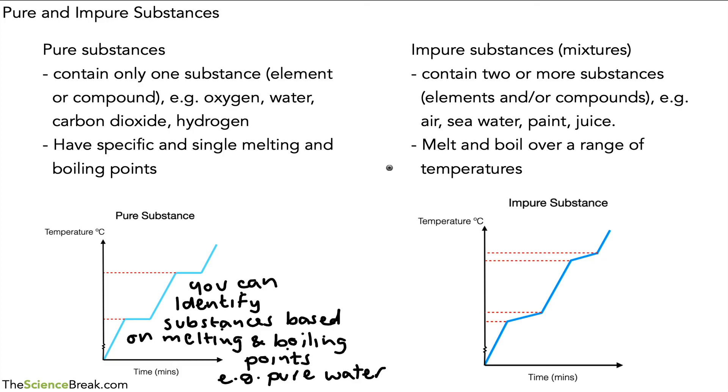Okay, so this was a summary of what we mean by pure and impure substances and how we can use graphs to identify which one of those two we might have. Thank you for watching and I'll see you soon.